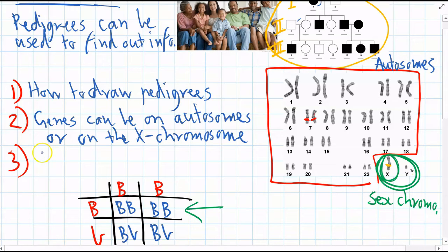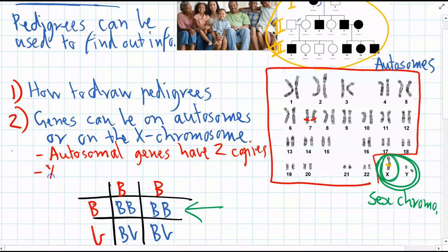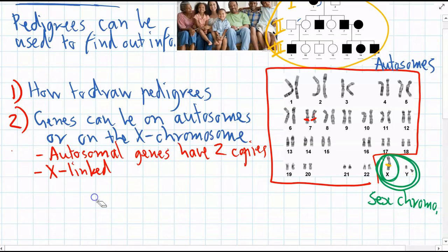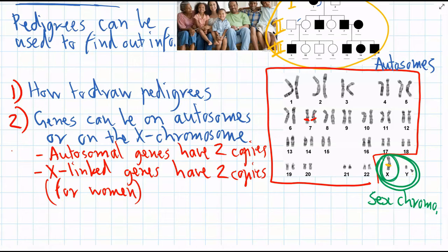So we need to remember that autosomal genes have two copies of that allele. But X genes on the X chromosome, and we call those X-linked. X-linked genes, the person might have two copies for females, because females have two X chromosomes.